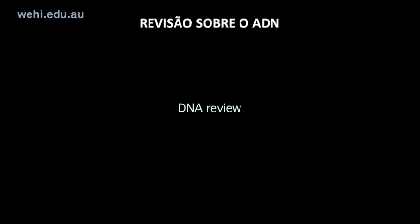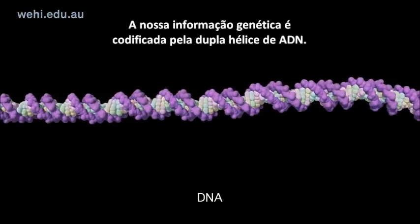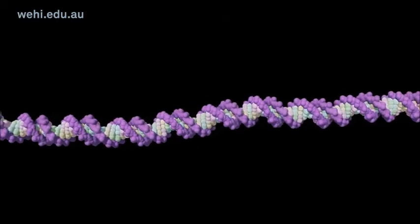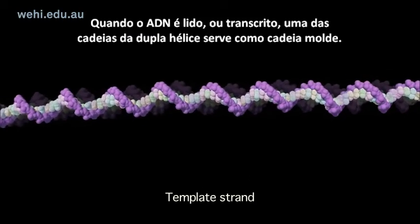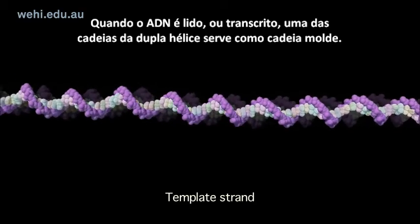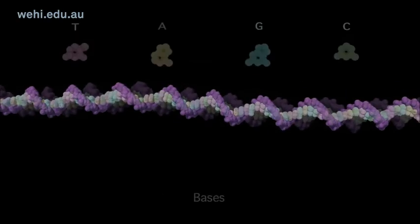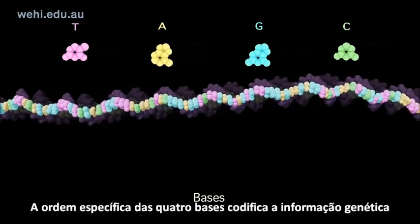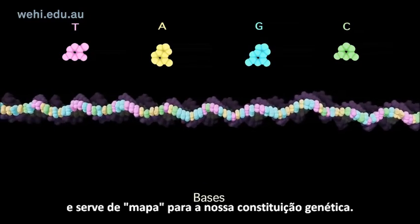DNA Review. Our genetic information is encoded by the DNA double helix. When DNA is read or transcribed, one strand of the double helix serves as a template strand. The specific order of the four bases encodes genetic information and serves as the blueprint for our genetic makeup.